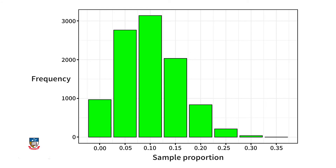Will it always do that? No, but let's check. I have sampled 20 marbles 10,000 times. For each sample, I calculated the sample proportion, then counted the number of times I got each sample proportion. You can see that we get a variety of sample proportions, but the most common value is the true value, 0.1.